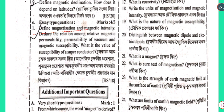Question: Define magnetization and magnetic intensity. Deduce the relation among relative magnetic permeability, permeability of vacuum, and magnetic susceptibility. What is the value of susceptibility of a superconductor?